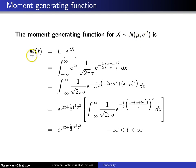First of all, M(t) equals the expected value of e to the tx. That is the definition of the moment-generating function for any random variable x.